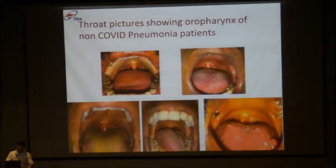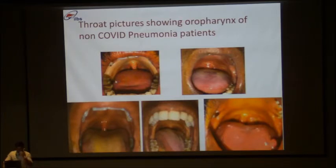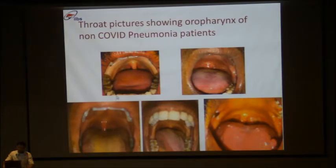On chest radiograph, sole interstitial infiltrates bilaterally and diffusely point towards viral etiology. On the contrary, purely localized lobar alveolar infiltrates point towards bacterial infection. Response to antibiotics is rapid in bacterial pneumonias and absent in viral pneumonia. Regarding upper respiratory tract examination, before sending for respiratory viral throat swab panels, examining the throat is useful. The posterior pharyngeal arch and palatal areas may show erythema; submucosal hemorrhages can be seen in the anterior and posterior pharyngeal arches and uvula.